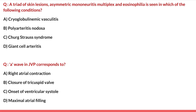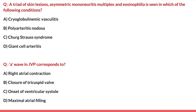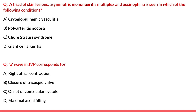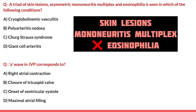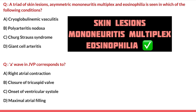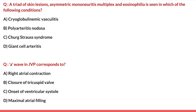Next question: a triad of skin lesions, asymmetric mononeuritis multiplex, and eosinophilia is seen in which of the following conditions? Options are cryoglobulinemic vasculitis, polyarteritis nodosa, Churg-Strauss syndrome, and giant cell arthritis. Cryoglobulinemic vasculitis is associated with palpable purpura and arthralgia/glomerulonephritis but does not have eosinophilia and mononeuritis multiplex — ruled out. Polyarteritis nodosa has skin lesions and asymmetric mononeuritis multiplex, but eosinophilia is not a feature — ruled out. Giant cell arthritis mainly presents with headache localized to the temporal region — ruled out. Churg-Strauss syndrome is characterized by skin lesions, asymmetric mononeuritis multiplex, and eosinophilia. It is also called eosinophilic granulomatosis with polyangiitis. Hence Churg-Strauss syndrome is the correct answer.